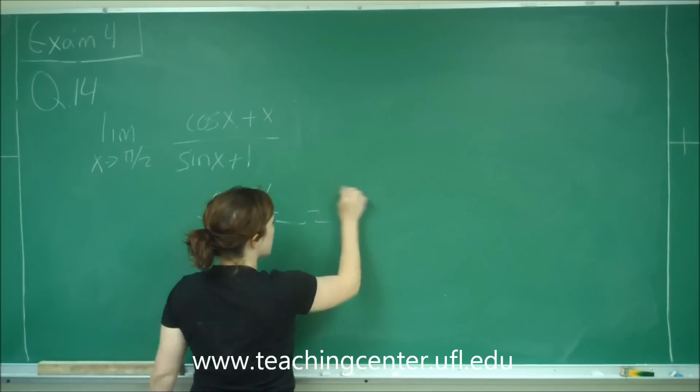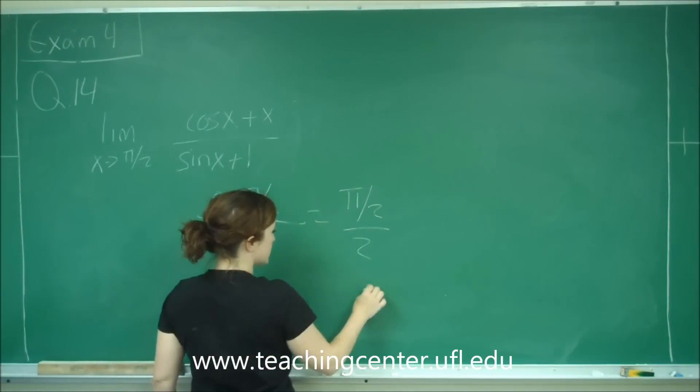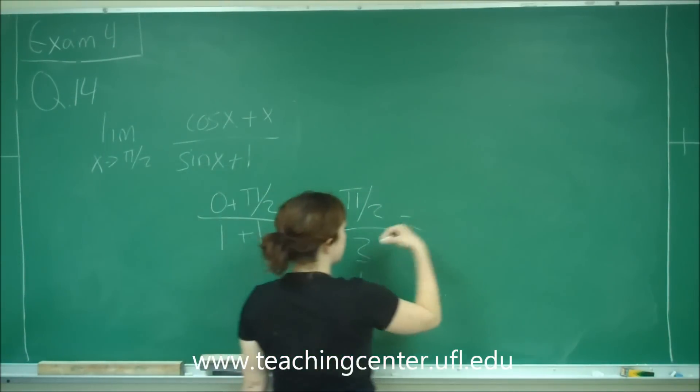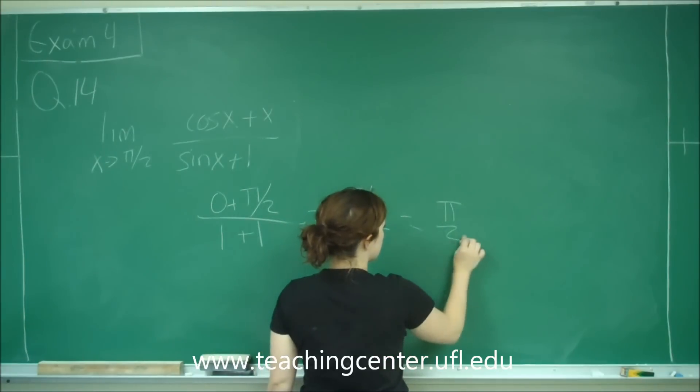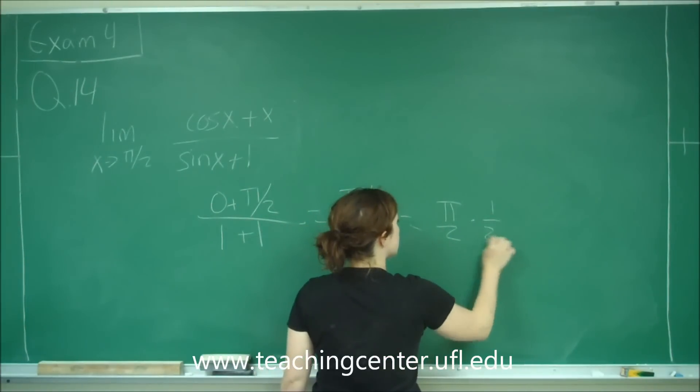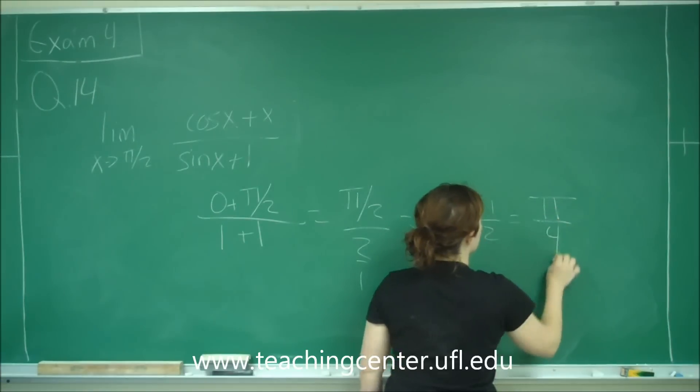So this just gives us pi over 2 over 2 over 1. So when I keep changing, this gives me pi over 2 times 1 over 2, which is equal to pi over 4.